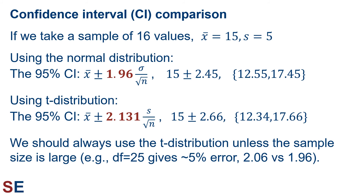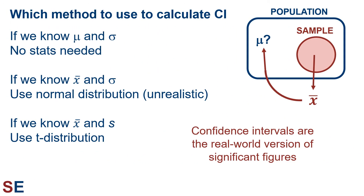For this reason, it's best practice to always use the t distribution when calculating confidence intervals. The purpose of confidence intervals is to estimate the value of the population mean from a sample mean. If we knew the population mean and standard deviation, we wouldn't need confidence intervals or statistics at all. In the real world, confidence intervals are used when we know the sample mean and sample standard deviation, in which case we use the t distribution. Since confidence intervals represent our confidence in the true value, you can think of them as the real world versions of significant figures.